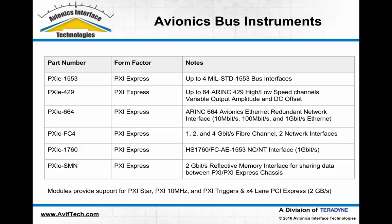An avionics Ethernet or ARINC 664 PXI Express interface module is also available. This module supports 10 megabit, 100 megabit, and up to gigabit Ethernet for both optical and electrical physical interfaces using an SFP connector. Additionally, a 1, 2, and 4 gigabit per second fiber channel interface is available, providing two fiber channel network interfaces operating over a range of fiber channel baud rates between 1 and 4 gigabits per second.